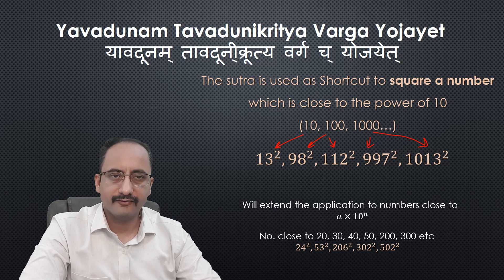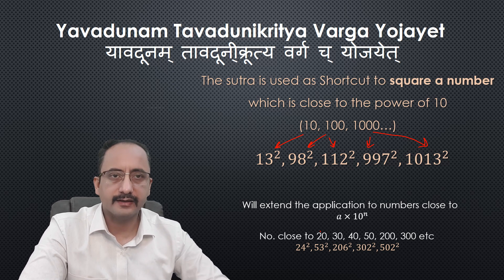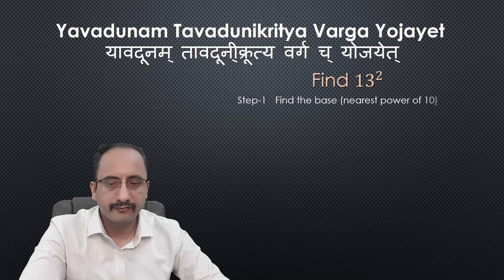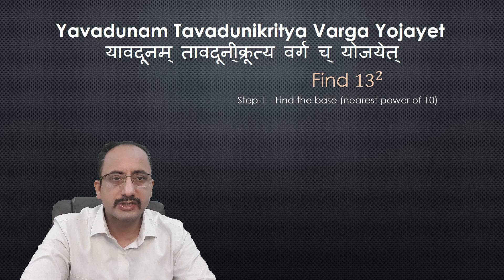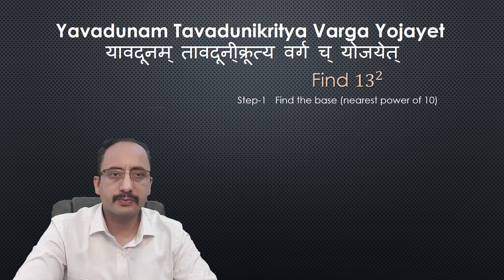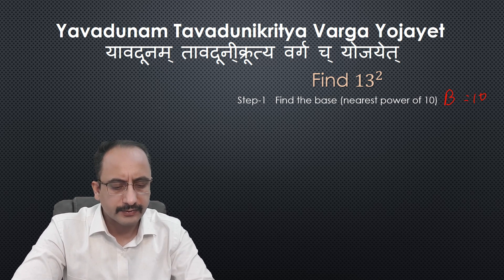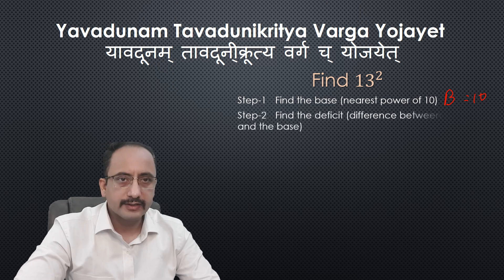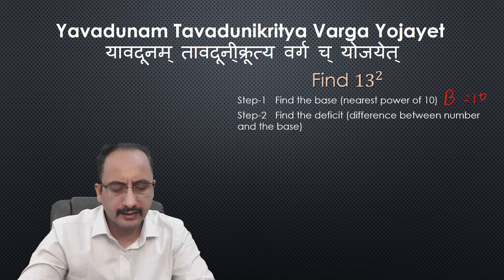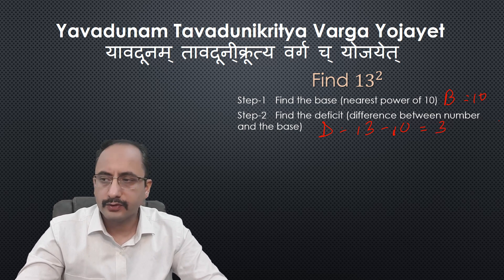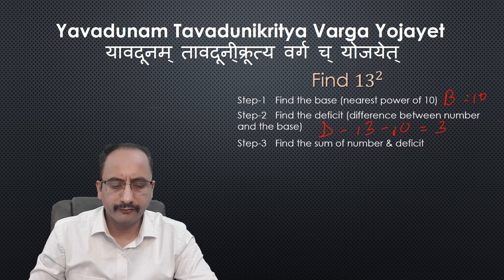Let's start with an example. Our first number is 13 — let's see how to find its square using the Yavadunam sub-sutra. Step 1: find the base. The base is the nearest power of 10, and in the case of 13, the nearest power of 10 is 10 itself. So our base B is equal to 10. Step 2: find the deficit. The deficit is the difference between the number and the base — 13 minus 10 gives us 3.